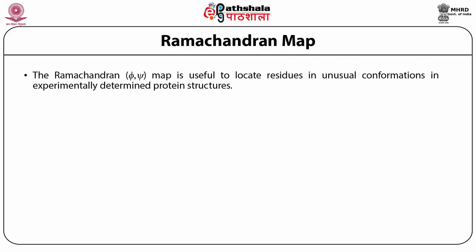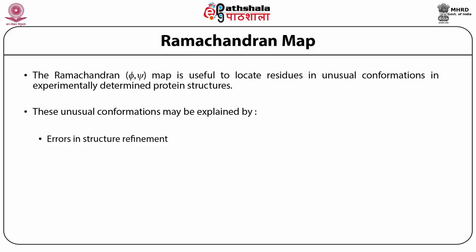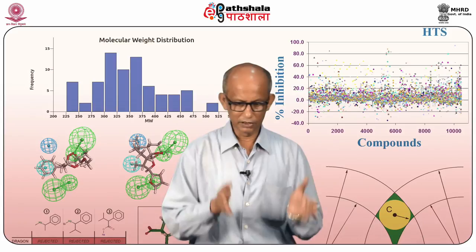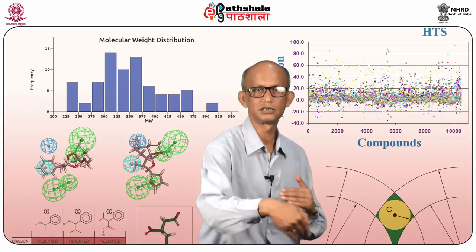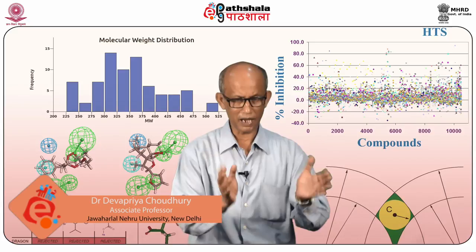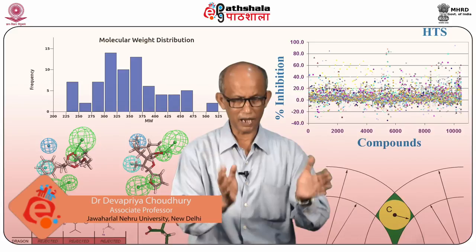To summarize: the Ramachandran map is useful to locate residues in unusual conformations. These unusual conformations may be due to errors in structure refinement most of the time, but many times they also indicate rare special interactions — one example being metal binding. The map quickly draws the scientist's attention to where interesting science may exist — out of thousands of residues, it very quickly identifies one or two residues where something very unusual is going on, for you to analyze and interpret. Thank you very much.